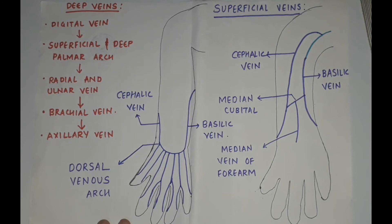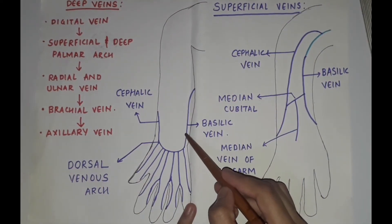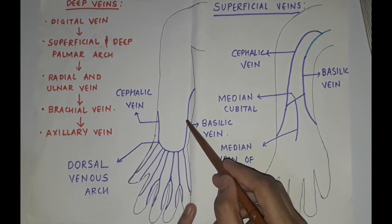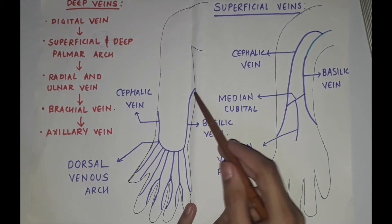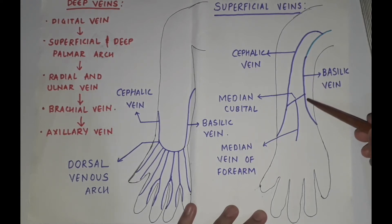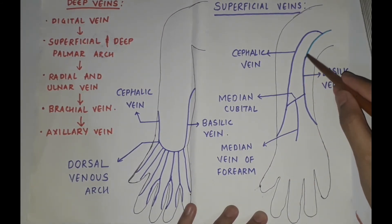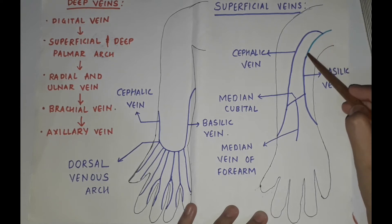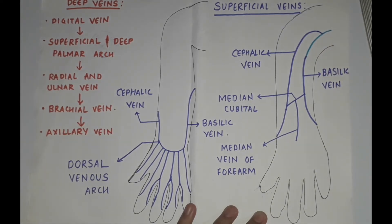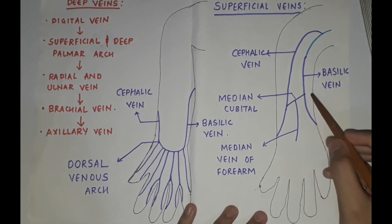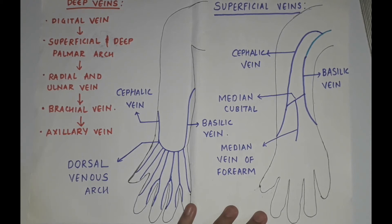The basilic vein is the post-axial vein of the upper limb. It begins from the medial end of the dorsal venous arch. It runs upwards along the medial border of the forearm, winds around this border near the elbow, continues in front of the elbow along the medial margin of the biceps brachii muscle up to the middle of the arm, where it pierces the deep fascia and joins the axillary vein at the lower border of the teres major muscle. At about 2.5 cm above the medial epicondyle of the humerus, it is joined by the median cubital vein. It is accompanied by the posterior branches of the medial cutaneous nerve of the forearm and the terminal part of the dorsal branch of the ulnar nerve.